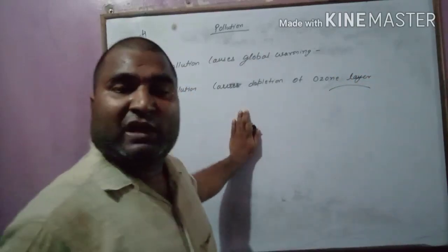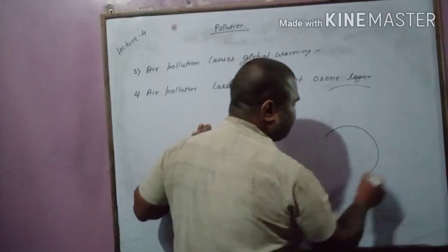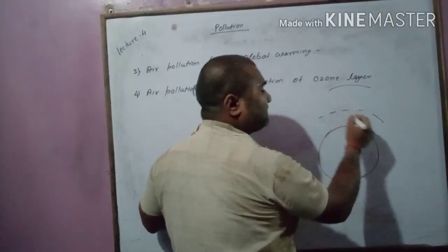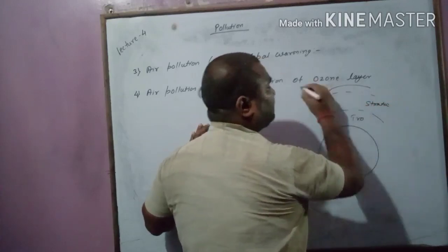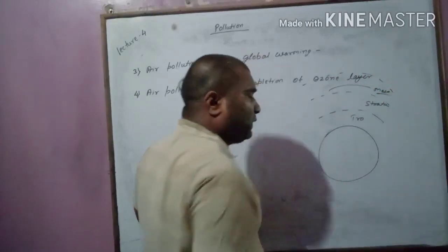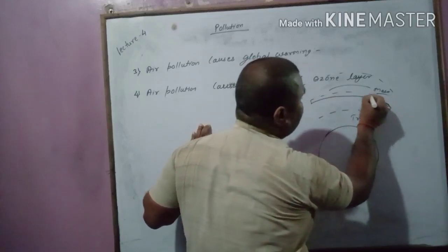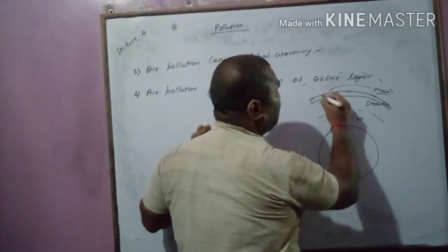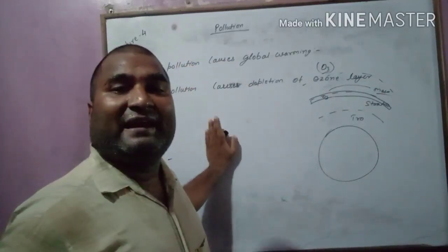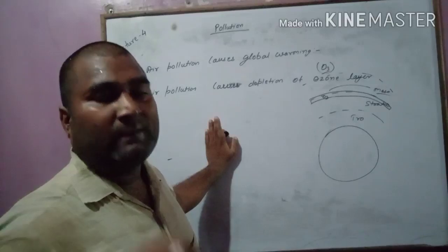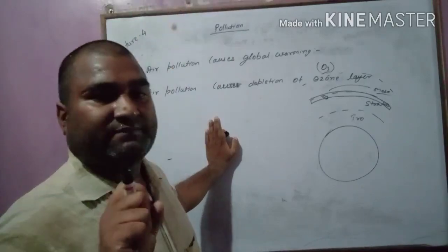What is the ozone layer? It is a layer of ozone gas present in the upper part of the stratosphere. The first atmospheric layer near the earth is called the troposphere, the second is the stratosphere, and the third is the mesosphere. In the upper part of the stratosphere there is a layer of ozone gas, O3. This ozone gas is essential for blocking ultraviolet radiation coming from the sun.